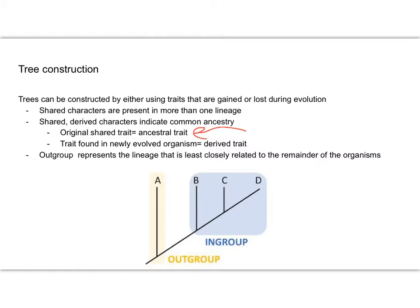My outgroup is going to be the lineage that is the least closely related to the remainder. Whenever you have a phylogenetic tree that looks like this, this is usually always our outgroup. This is the one that is the least related to all of the other organisms.